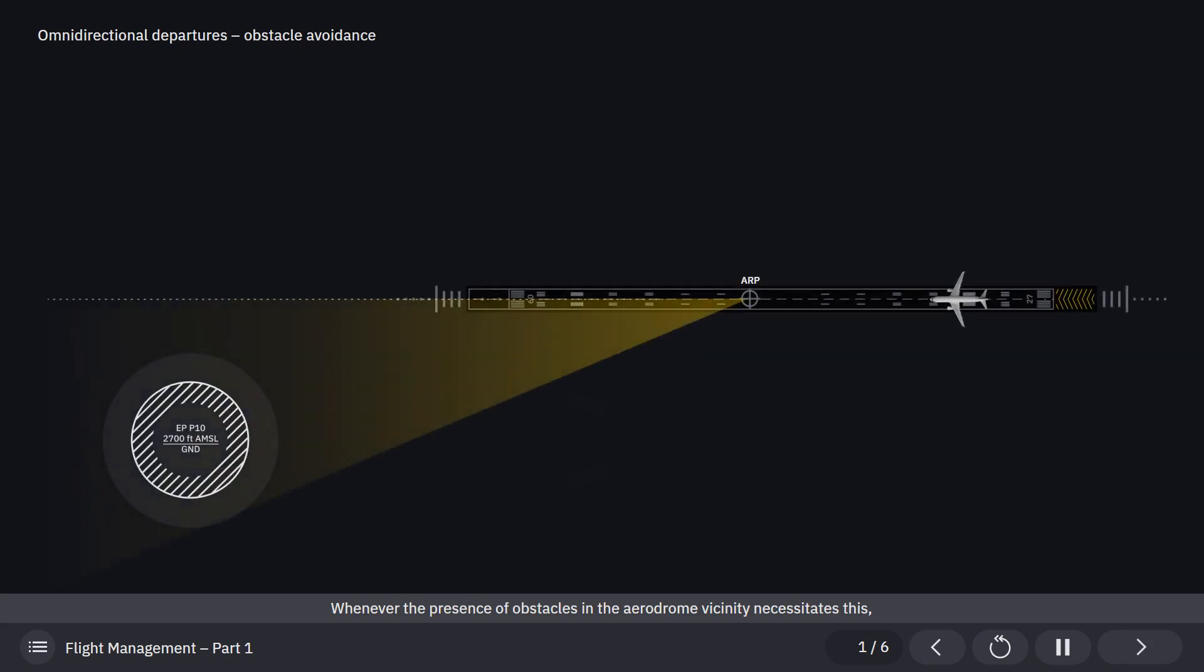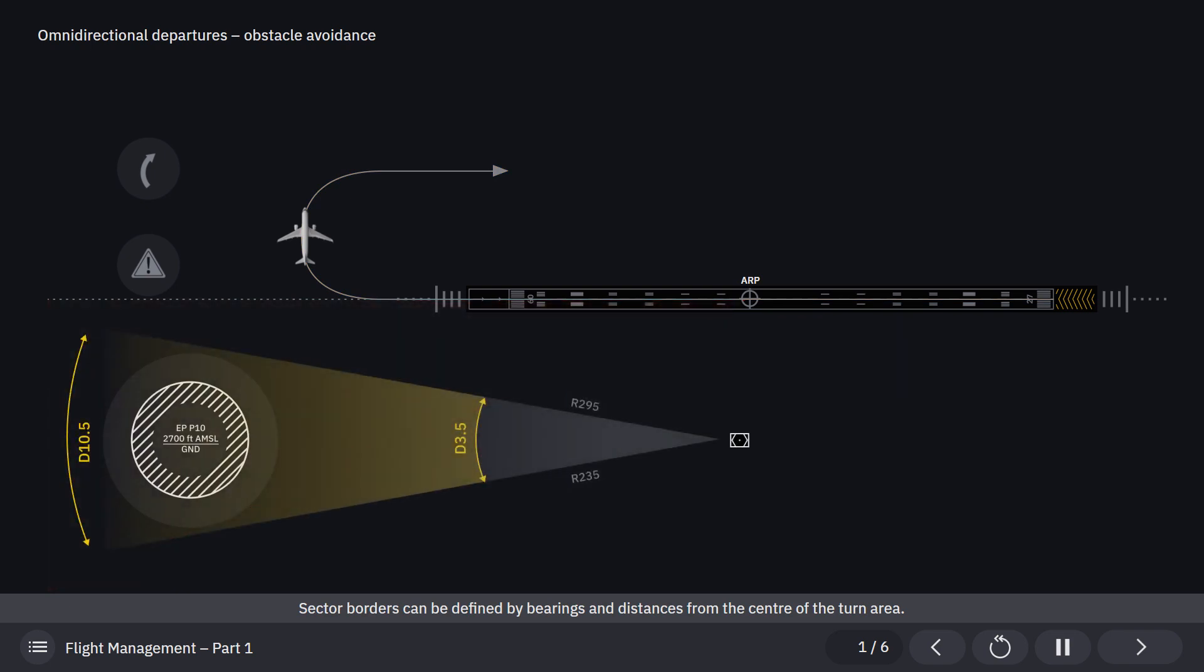Whenever the presence of obstacles in the aerodrome vicinity necessitates this, sectors that should be avoided can be specified and restricted from use in the omnidirectional departure procedure. Sector borders can be defined by bearings and distances from the center of the turn area.